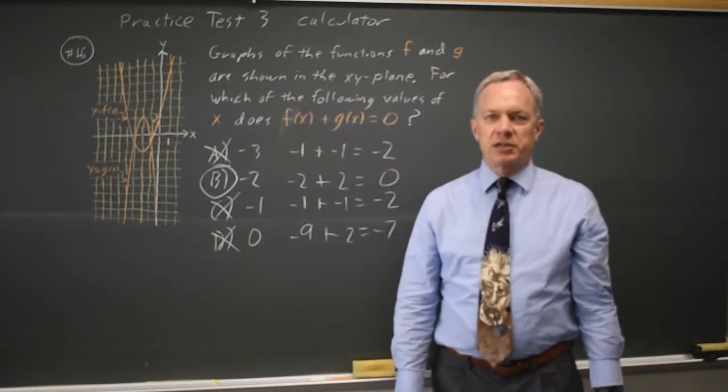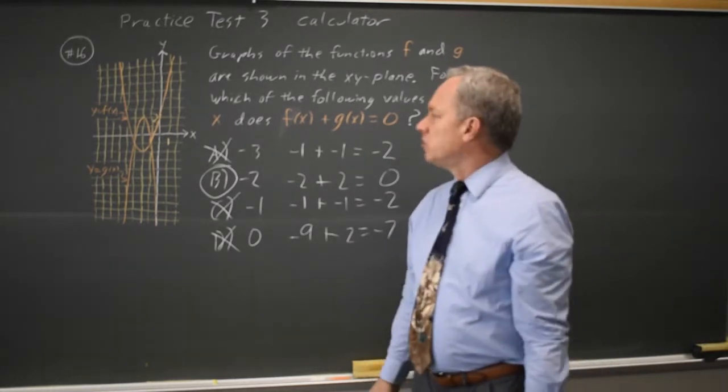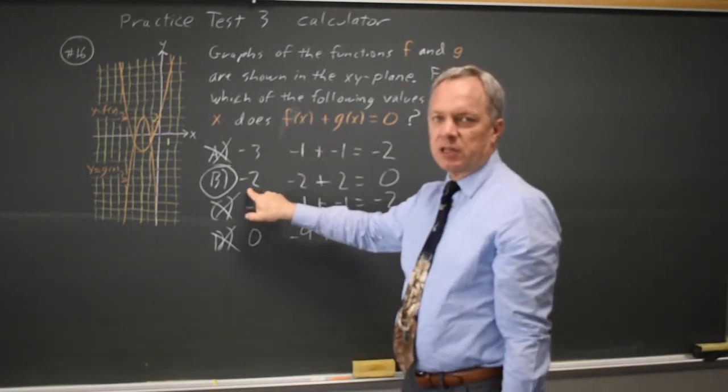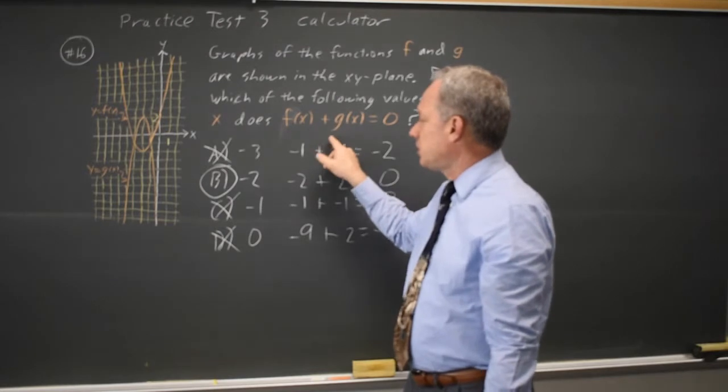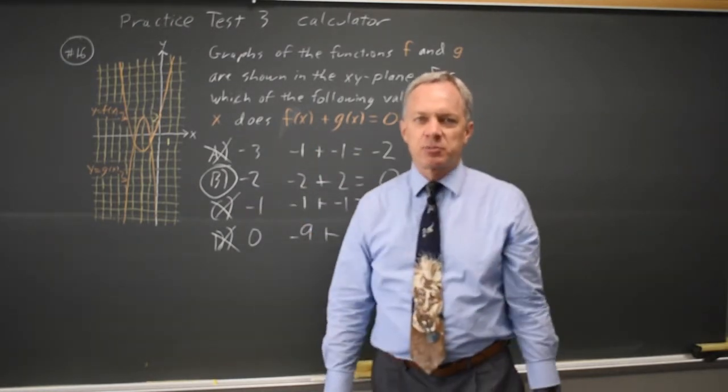So choice B would be the correct answer. If they're asking for the sum of f of x and g of x, you find the value of the function f when x equals, in this case, negative 2, and the value of the function g when x equals negative 2, and you add them together to get f of x plus g of x.